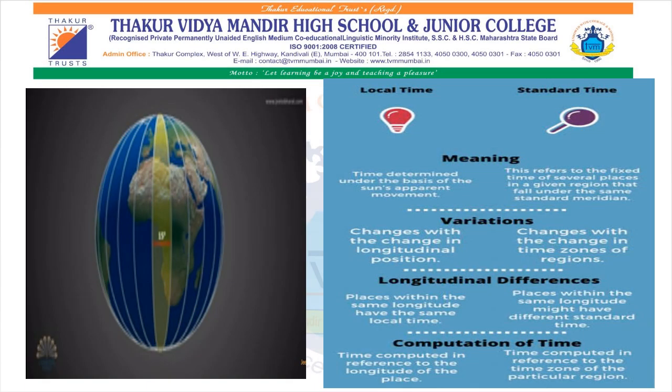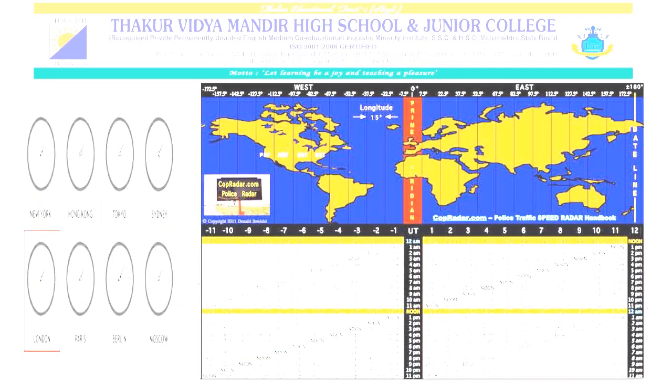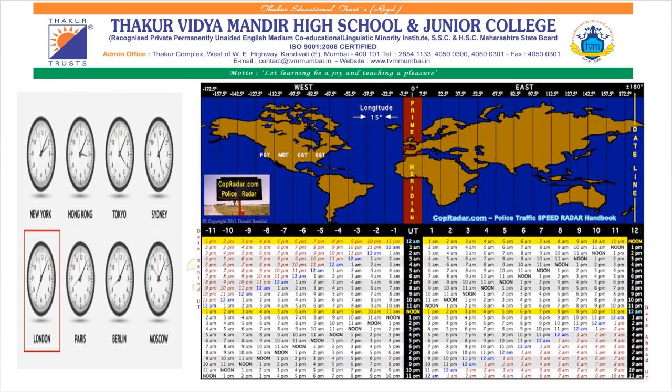Another thing to remind you: places on the same longitude show the same local and standard time. We have seen that standard time is set to avoid any chaos and confusion that arises due to differences in local time within the same country. Similarly, to avoid confusion between two countries of the world due to differences in standard time, we need a universal standard time.